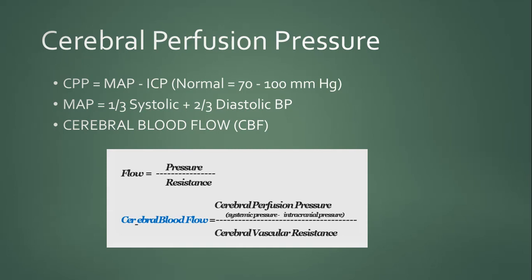Cerebral blood flow equals pressure divided by resistance, calculated as cerebral perfusion pressure divided by cerebral vascular resistance. There are different methods to measure cerebral blood flow; generally it can be measured through transcranial Doppler ultrasound.